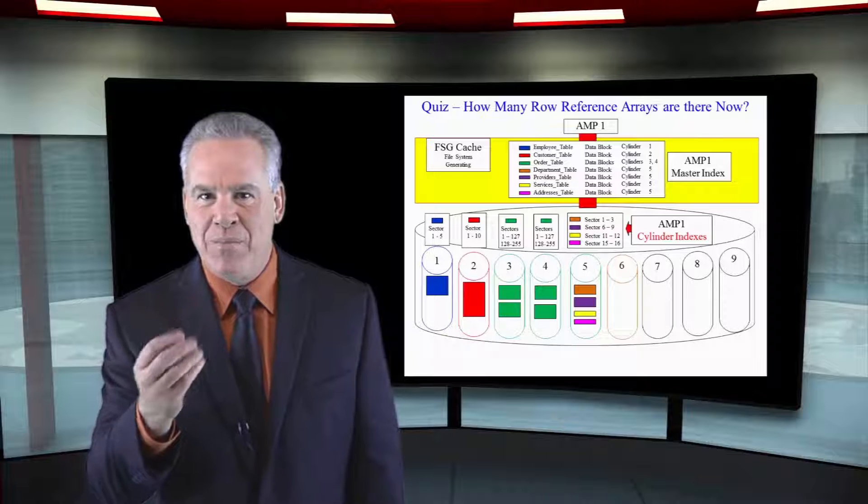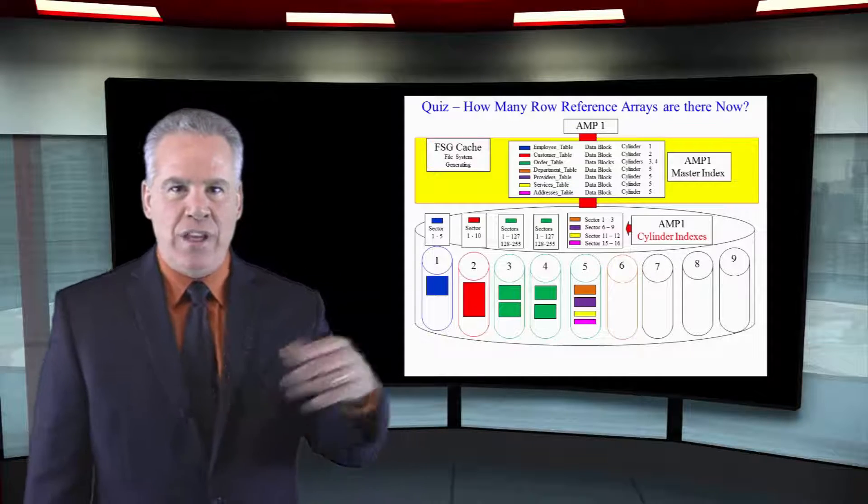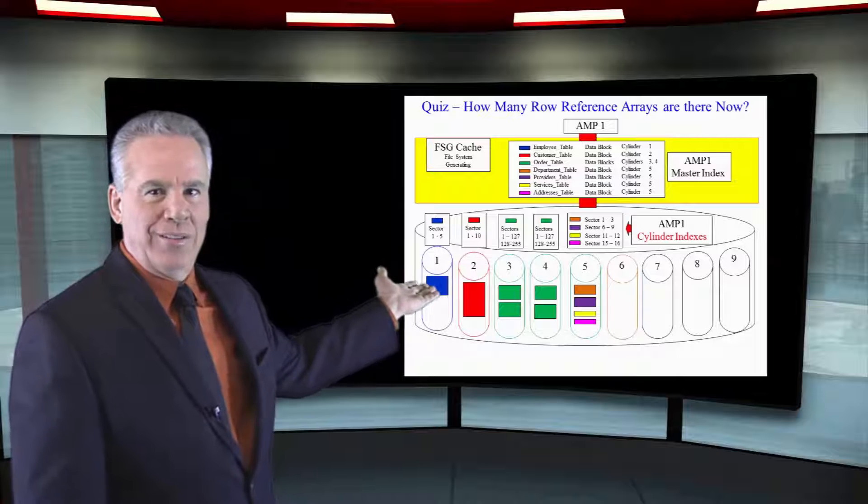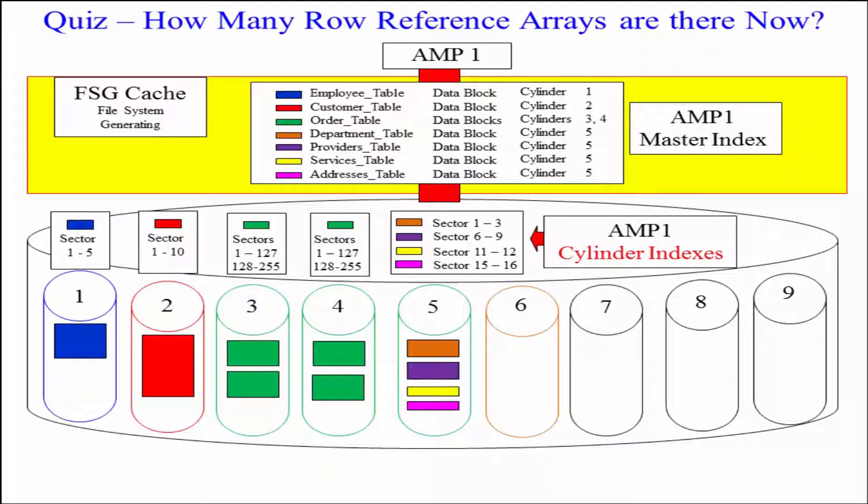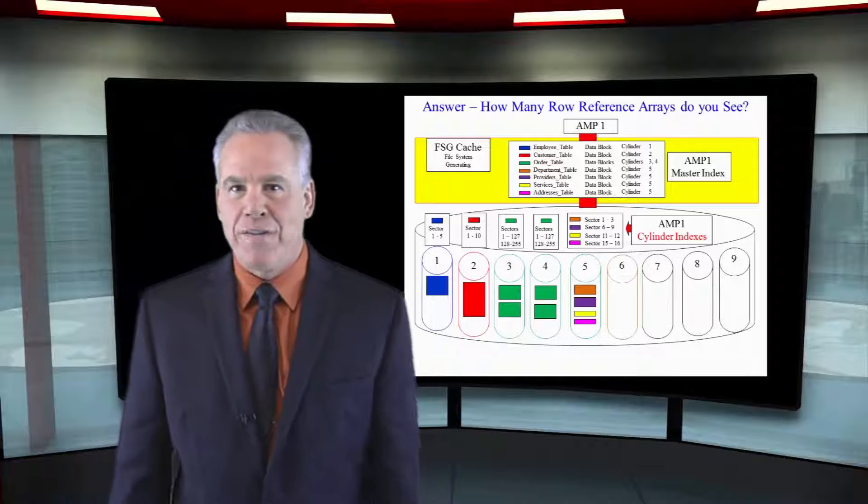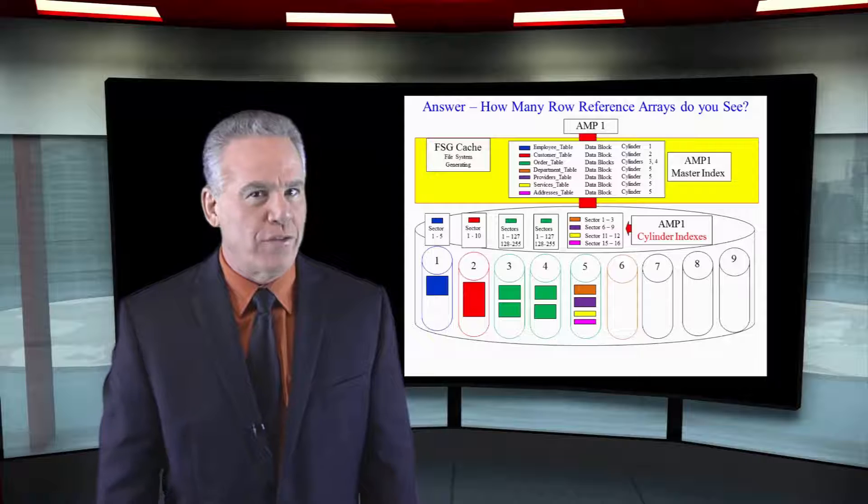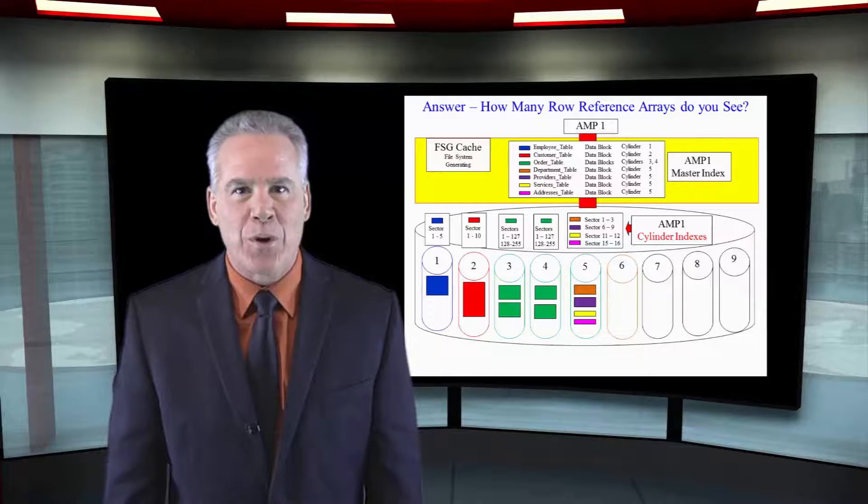Stay with me. How many row reference arrays do you see in the order table? The order table has split and we've got four blocks in total. There are four row reference arrays, one per block.